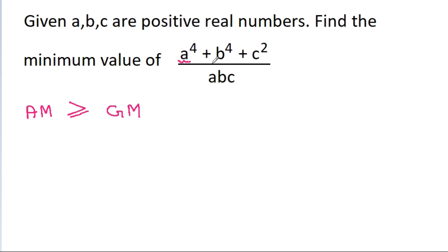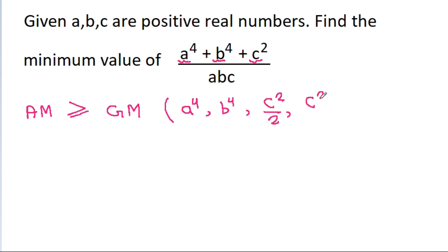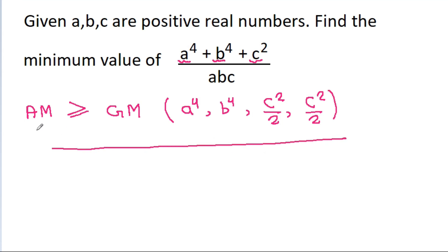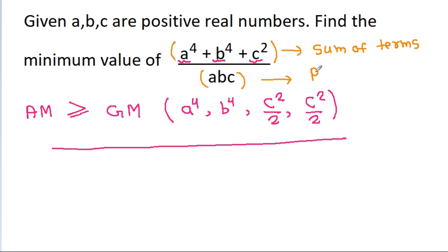We have the terms a⁴, b⁴, and c². If we apply the AM-GM relation to a⁴, b⁴, c²/2, and c²/2, we select terms in such a way that their sum matches the numerator and their product comes from the GM side.